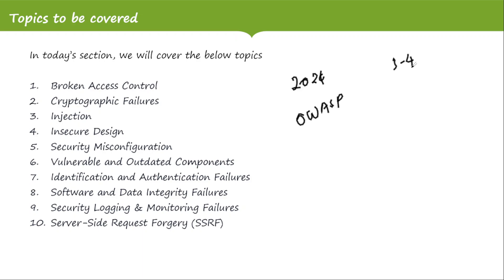They conduct a survey every couple of years, around 3 to 4 years, across different web applications. The next OWASP Top 10 is expected to be released in 2025. These are the top 10 vulnerabilities observed in many applications during the 2021 survey.